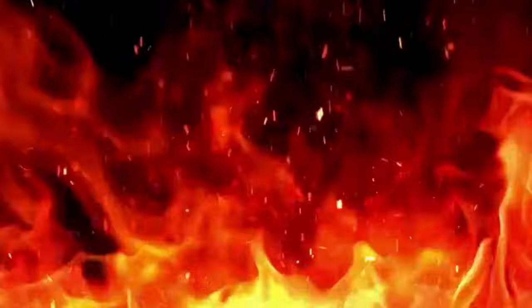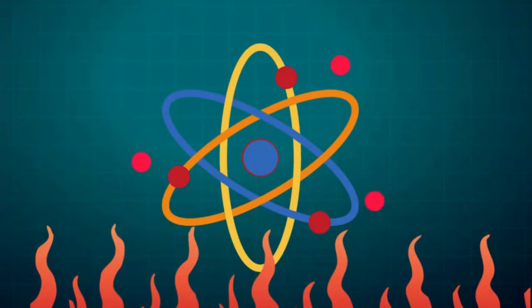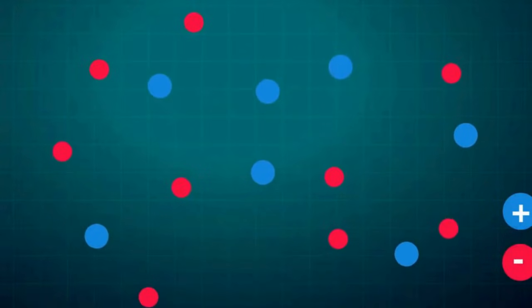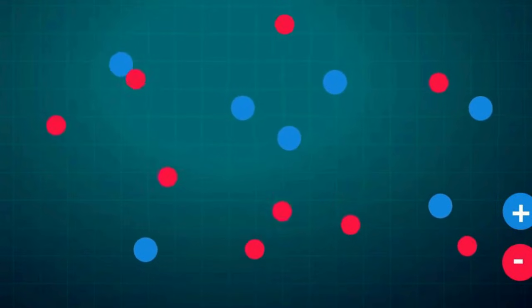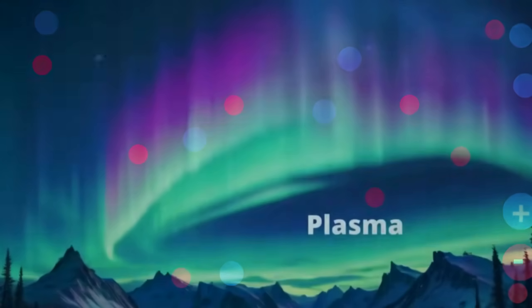Now heat some gases even more, like really hot, and the electrons may become stripped from the nucleus and you create an ionized gas with free negatively charged electrons and positive ions. You now have this fourth state of matter called plasma.